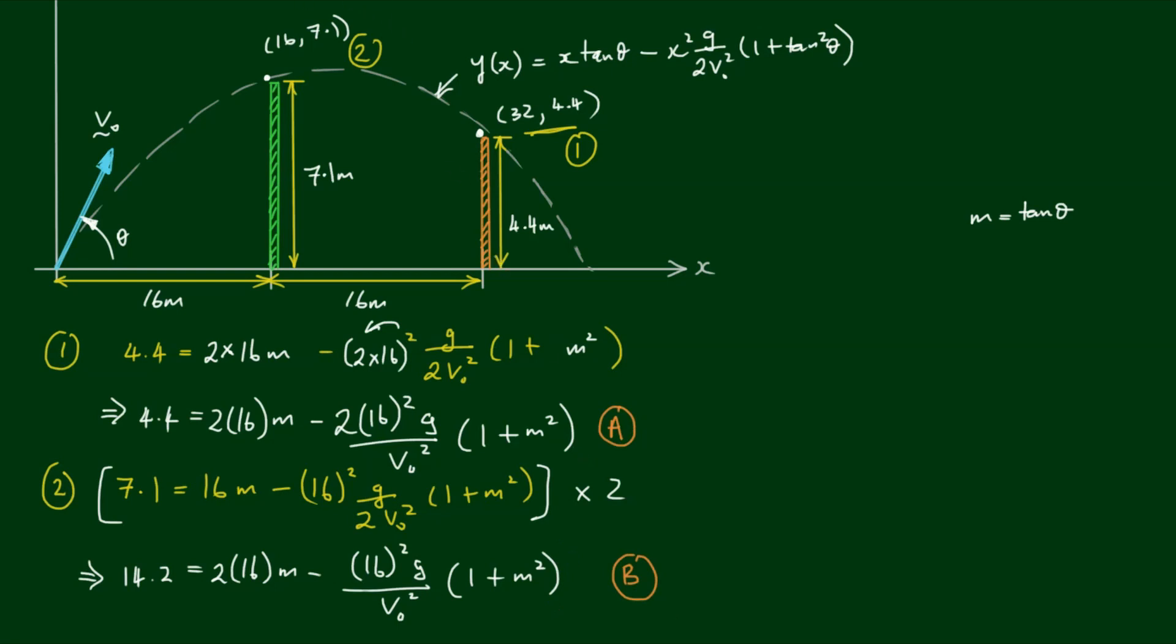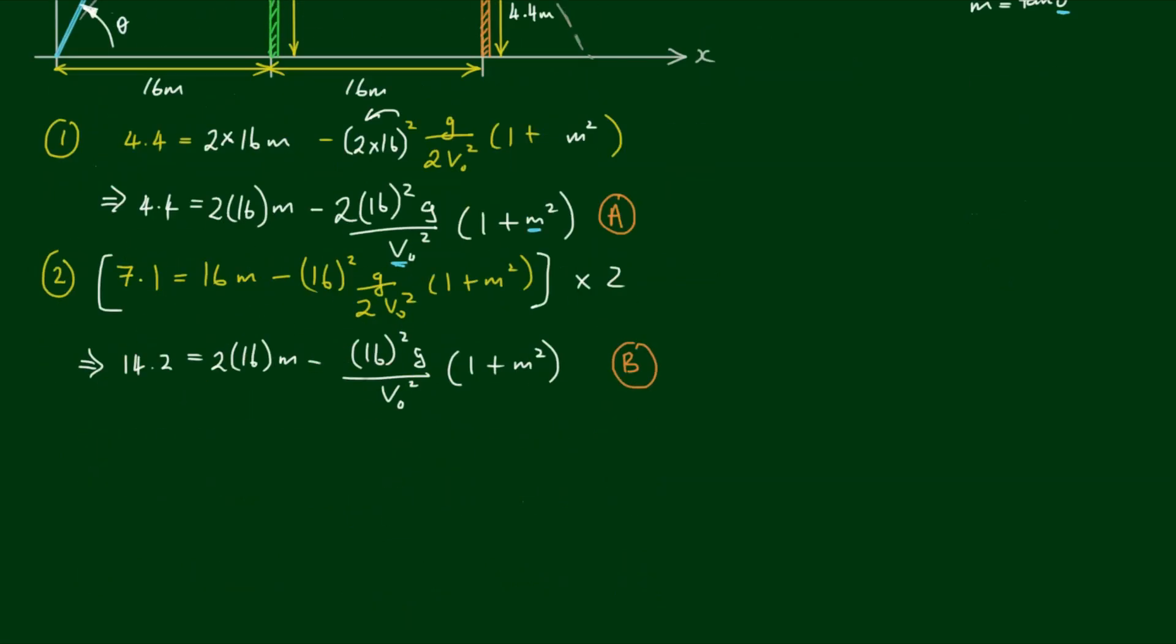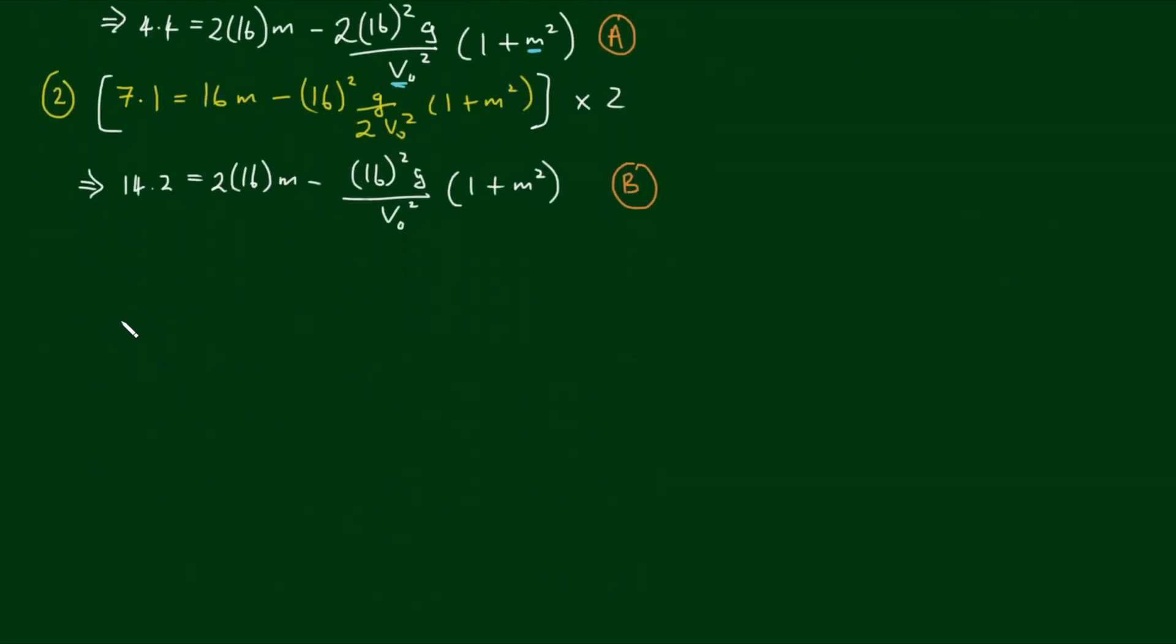So we have 2 equations and 2 unknowns. The unknowns being m and the initial velocity v0. m is an unknown because we have to solve for theta. We have 2 equations, 2 unknowns, therefore we can solve by simultaneous equations. What we'll do now to eliminate one of the variables is subtract equation a from equation b.